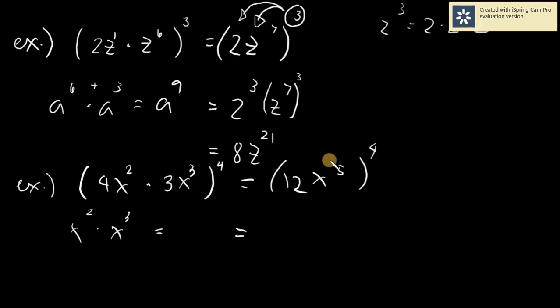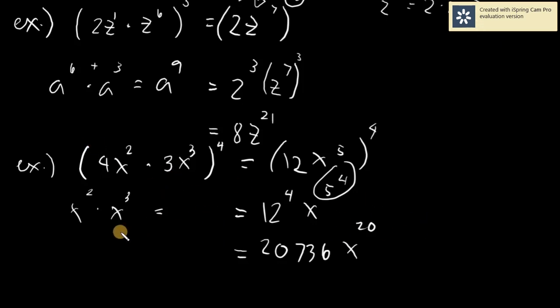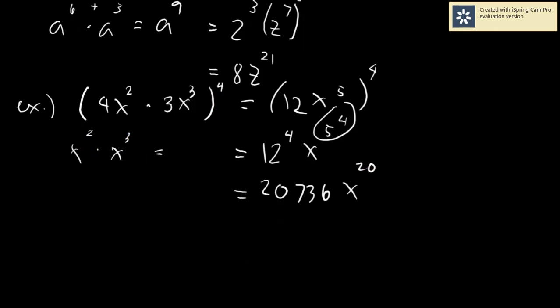So what do you do? Distribute. Don't be stingy, give it to everyone. So what would happen would be you will have 12 raised to 4, and you will have x raised to 5 raised to 4, right? And in this case, you multiply. But the 12 raised to 4 will give you, it's a little big, it's 20,736, x raised to, multiply, x raised to 20. And that's how you do it. Just simply apply the laws of exponent being product rule, add the exponent. And of course, power of a power.